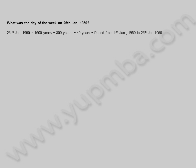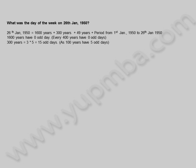What was the day of the week on 26th January 1950? 26th January 1950 is equal to 1600 years plus 300 years plus 49 years plus the period from 1st January 1950 to 26th January 1950. 1600 years have zero odd days — every 400 years have zero odd days. 300 years is equal to 3 into 5, which equals 15 odd days, as 100 years have 5 odd days. This equals 14 plus 1 odd day, which equals 1 odd day, since 7 odd days equals 1 week equals 0 odd days.